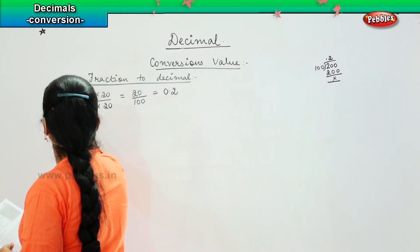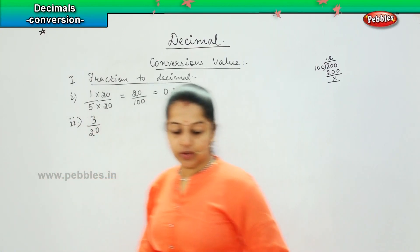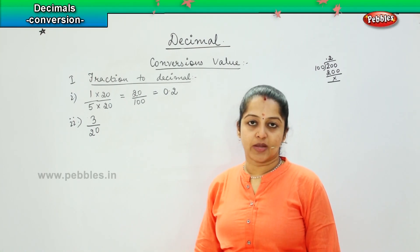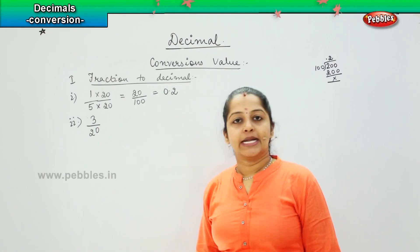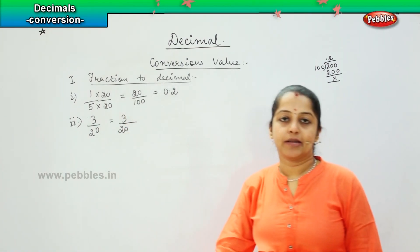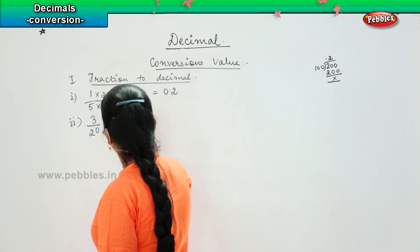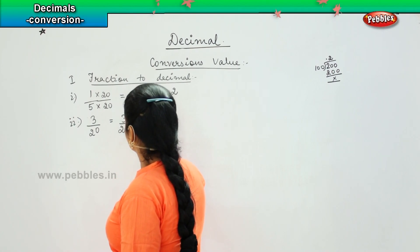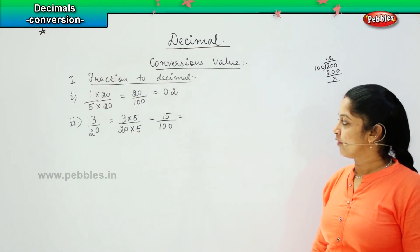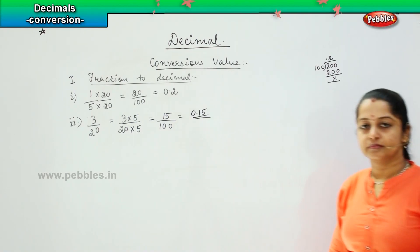Coming to the next question. So the next question says 3/20. So as I said, I have to convert this in the nearest tens or hundreds value, right, because that will make me easy to convert it into the decimal figure. So now this also I can multiply. How many times will 20 get multiplied to convert it into 105? So now I will be multiplying 5 with both the numerator and the denominator. So 3 into 5 is 15 and 20 into 5 is 100. So how will I write this one, children? 15/100 is nothing but 0.15. Clear?